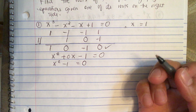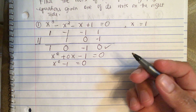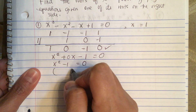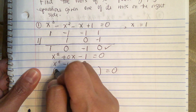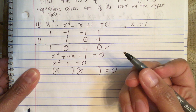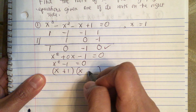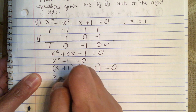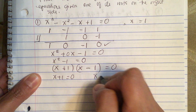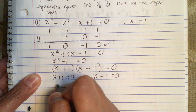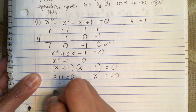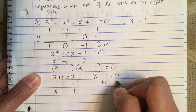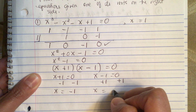Now we can factor x squared minus 1. We get (x + 1)(x - 1). Setting each factor equal to zero: x plus 1 equals 0, so x equals minus 1; and x minus 1 equals 0, so x equals 1.